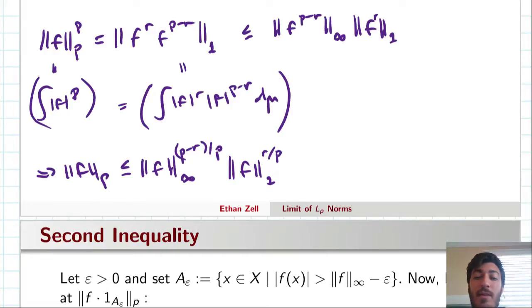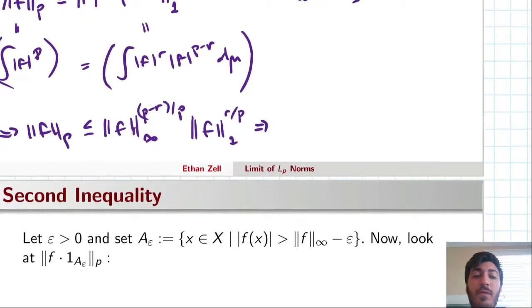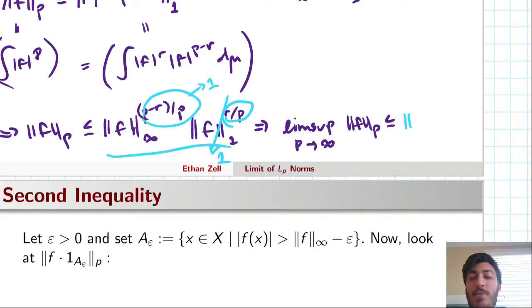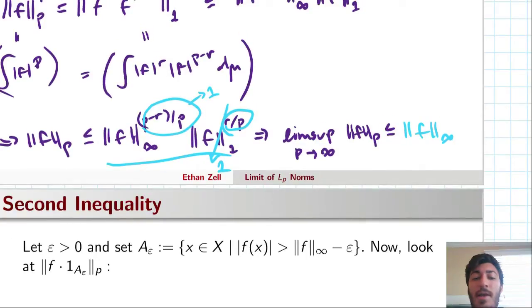So, in other words, we get that the limsup as p approaches infinity of f_p is bounded above by, okay, well, what's happening on the right side? Let's return to the right side here. As p goes to infinity here, this fraction goes to 0, which means this quantity goes to 1. And on the left side, we have p minus r over p. Well, r is just some number, so this quantity is actually going to 1, which means that the right side, as we apply the limit, is really just the L^infinity norm of f. So, we've gotten essentially what we wanted in one direction.